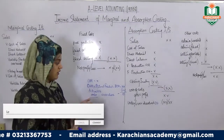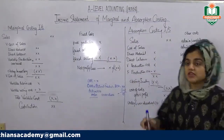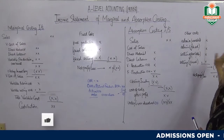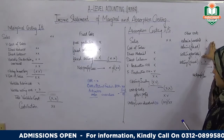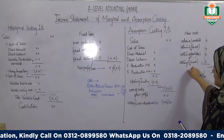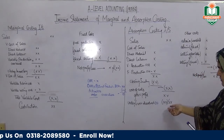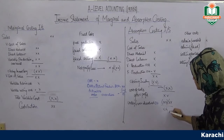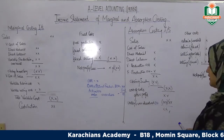If overabsorbed, you add it back. Then you have admin and other expenses: variable admin cost, fixed admin cost, variable selling cost, fixed selling cost, variable distribution cost, and fixed distribution cost. You sum all these costs and subtract them to reach your net profit or net loss.